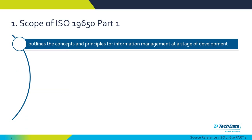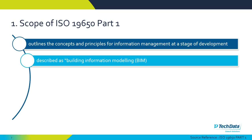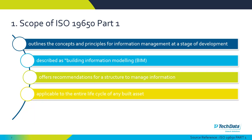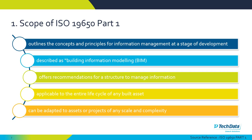The scope of the ISO 19650 part 1 document is defined as outlining the concepts and principles for information management at a stage of development or maturity through a project, with building information modelling being used in this process. It offers recommendations for a structure to manage information. It is applicable to the entire life cycle of any built asset — from a house to a hotel, hospital, or civil engineering projects such as bridges or wind farms — and can be adapted to assets or projects of any scale and complexity.